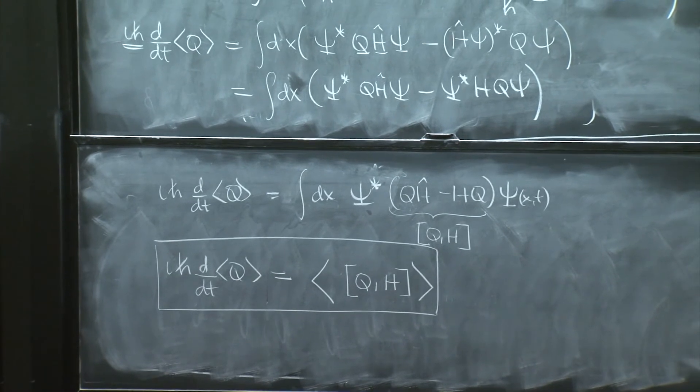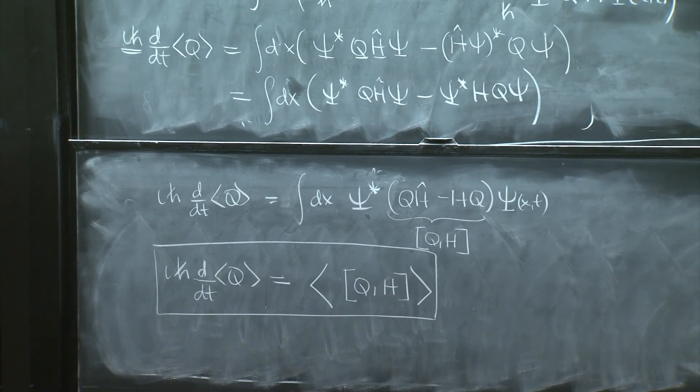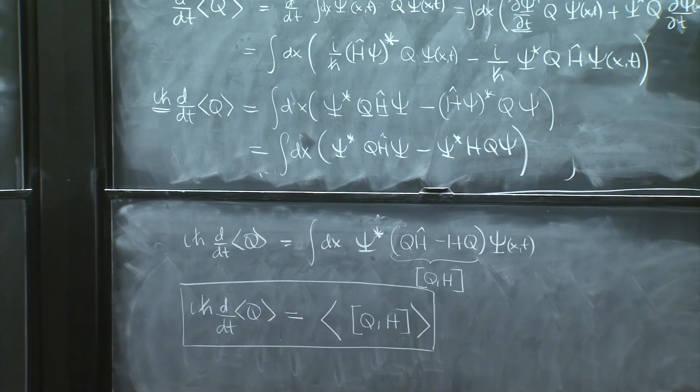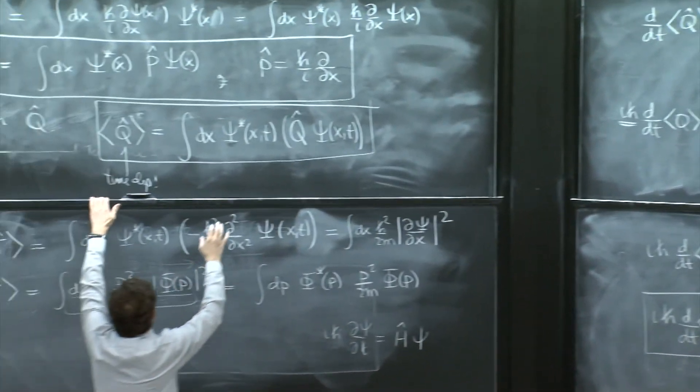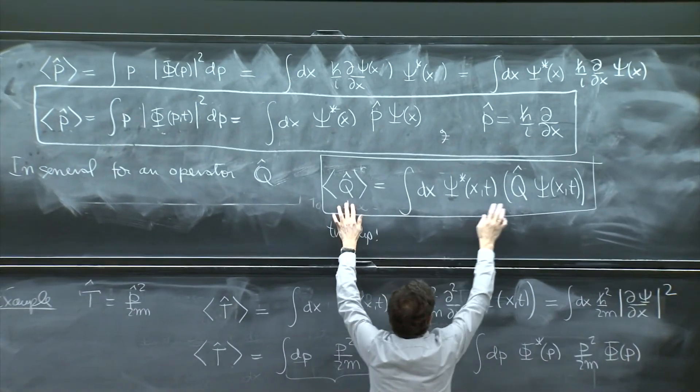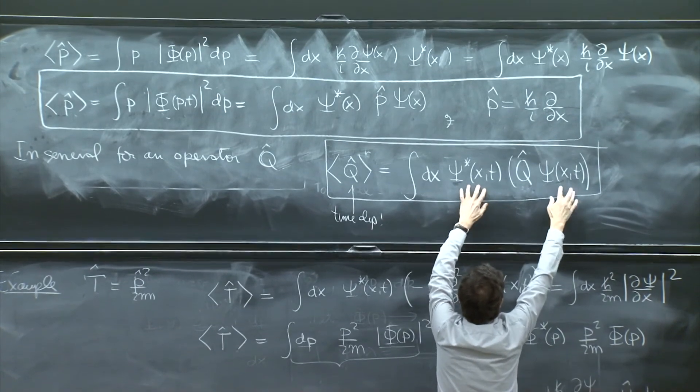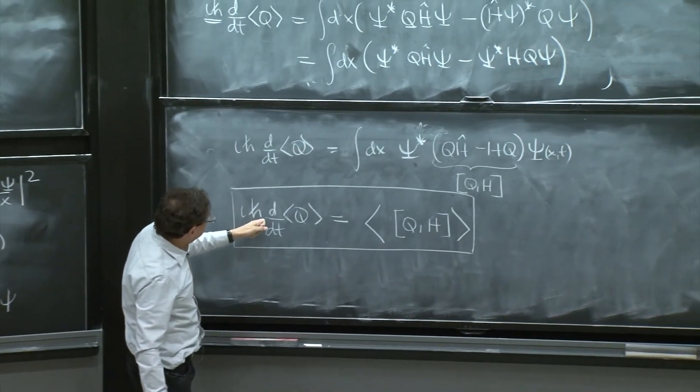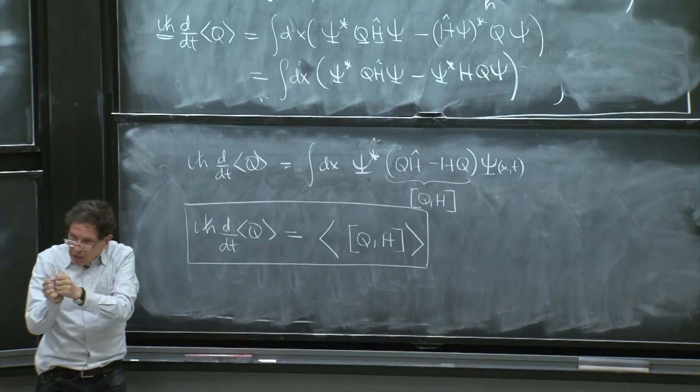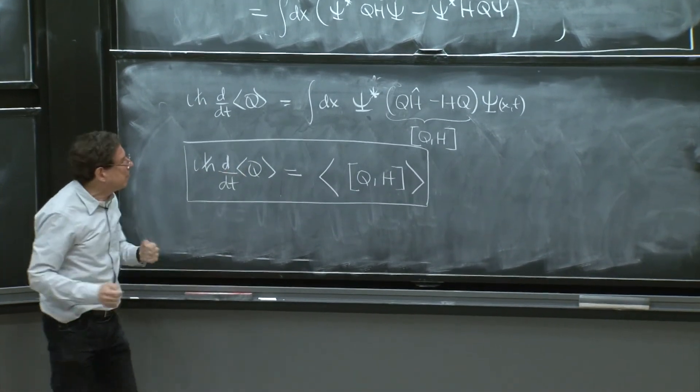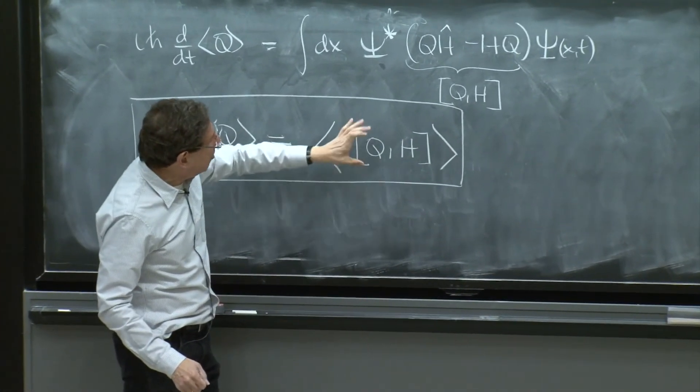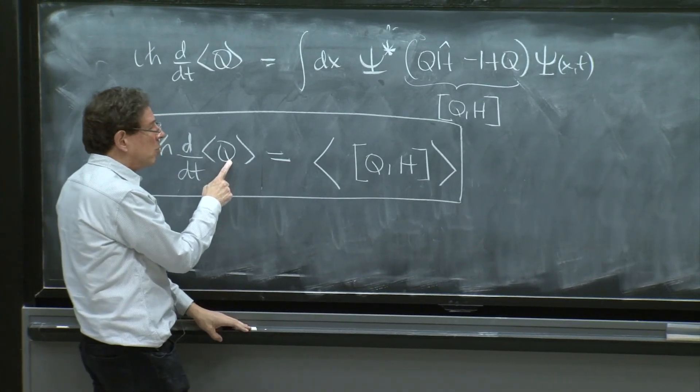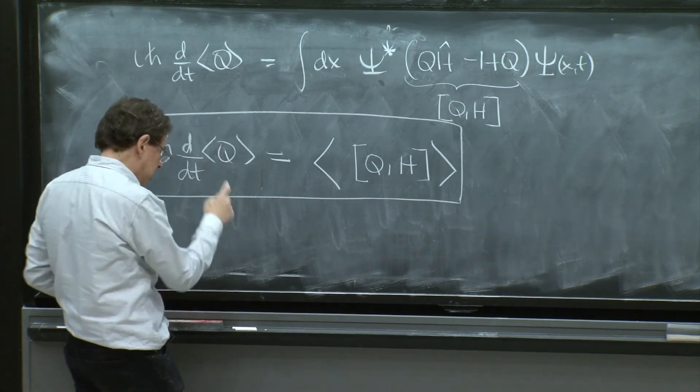This is actually a pretty important result. It has all the dynamics of the physics in the observables. Look, the wave functions used to change in time. Due to their change in time, the expectation values of the operators change in time, because this integral can depend on time. But here, what you have succeeded is to represent the change in time of the expectation value, the change in time of the position that you expect you find your particle, in terms of the expectation value of a commutator with a Hamiltonian. So if some quantity commutes with a Hamiltonian, its expectation value will not change in time.